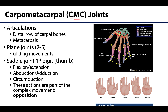The one exception is the thumb — the first digit — where this particular CMC joint is a saddle joint, capable of considerably more types of movements with a greater range of motion. You can try this on your own: try to move your CMC joints of digits two through five — not so easy — but try to move your first CMC joint and you have quite a bit more going on there.